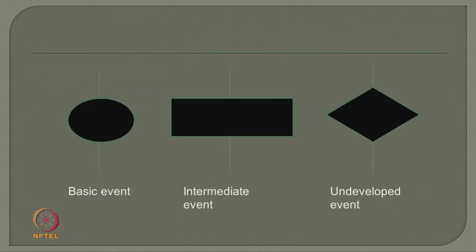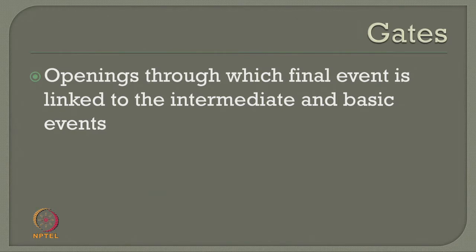The symbols used in fault tree analysis for three different levels of events are: a basic event represented by an elliptical shape, a rectangular box representing an intermediate event, and a rhombus symbol for an undeveloped event. These events are connected through gates — barriers or openings through which the final event is linked to intermediate and basic events. Gates form connection points between the final event and the intermediate and basic events.